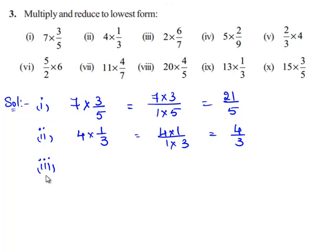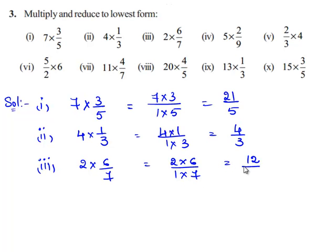Now let us consider the third bit: 2 times 6 by 7. We multiply the corresponding numerators and denominators. So 2 times 6 divided by 1 times 7 gives 12 by 7. Since 12 and 7 do not have a factor in common, the lowest form is 12 by 7.